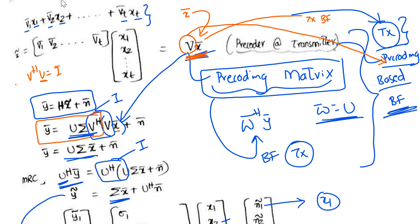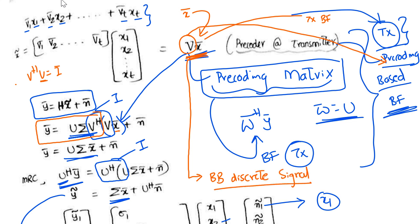Since the beamforming weights are applied to the signal at the baseband discrete signal stage, we are applying the vectors in the digital domain. This is also called digital beamforming. Since it is done at the transmitter, we can say transmit digital beamforming, or we can say pre-coding based beamforming.